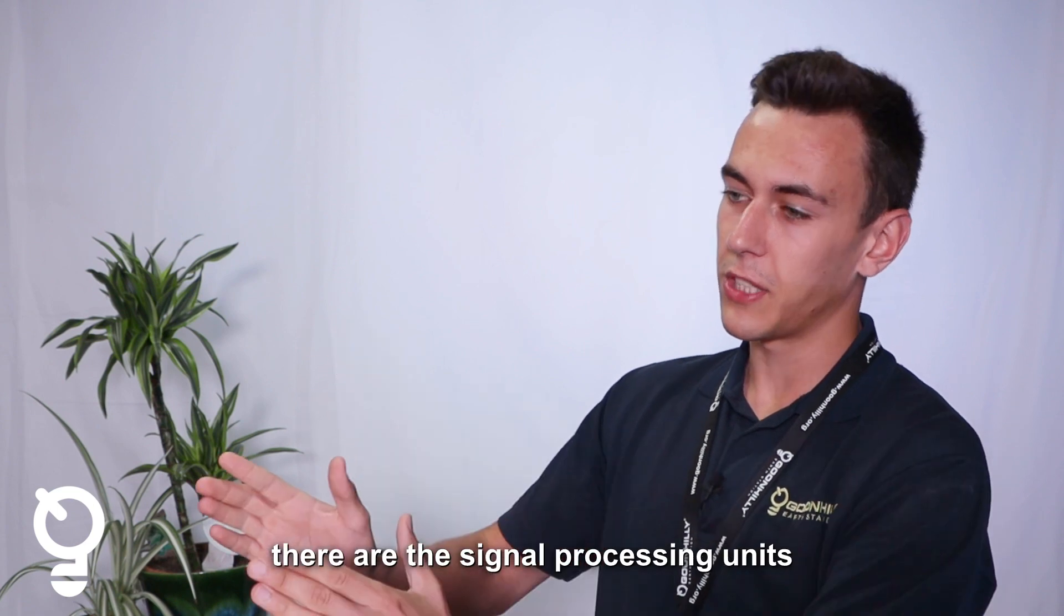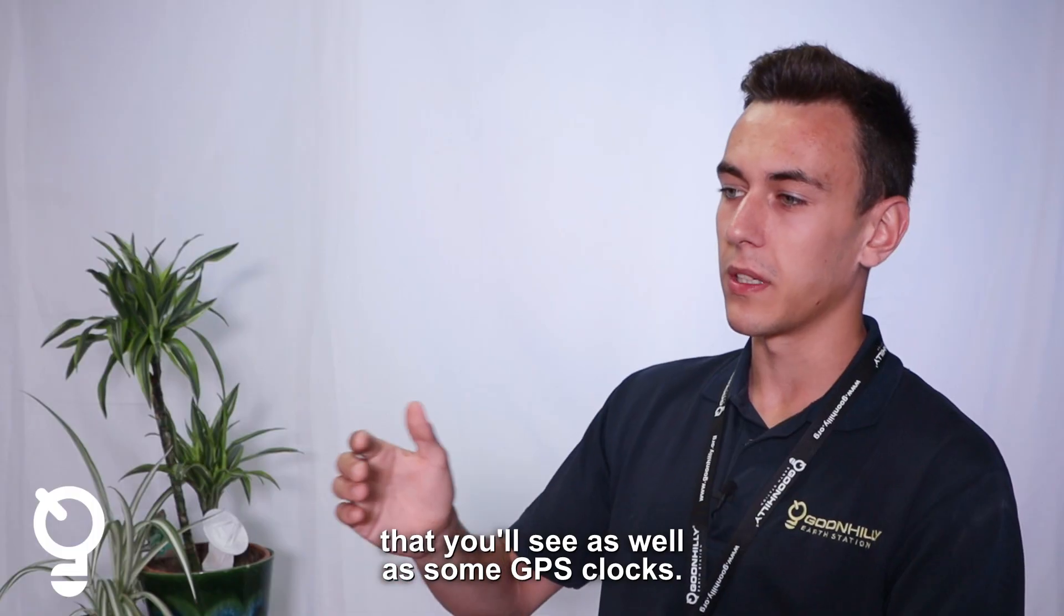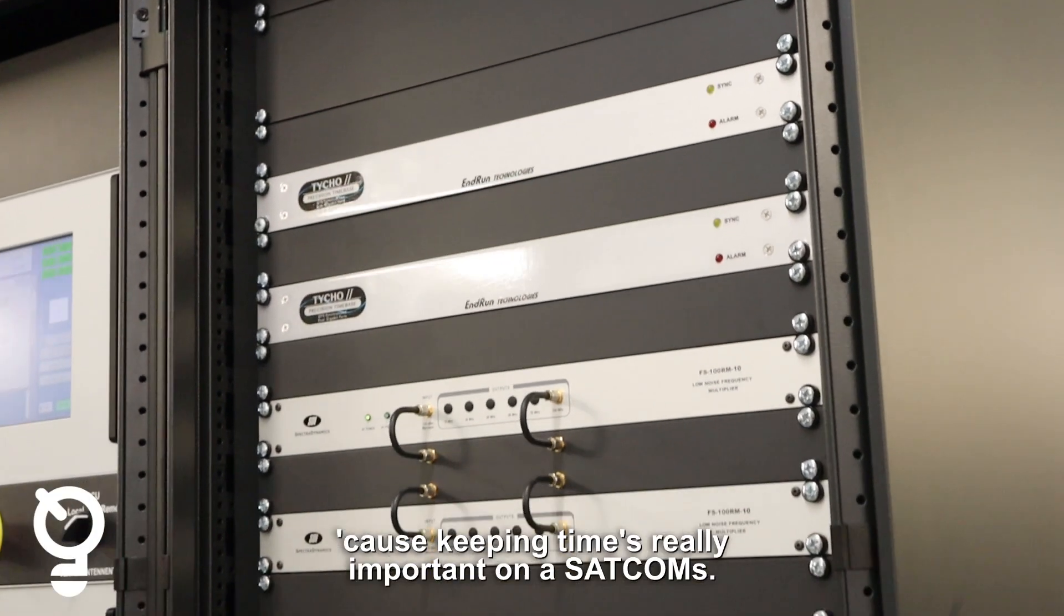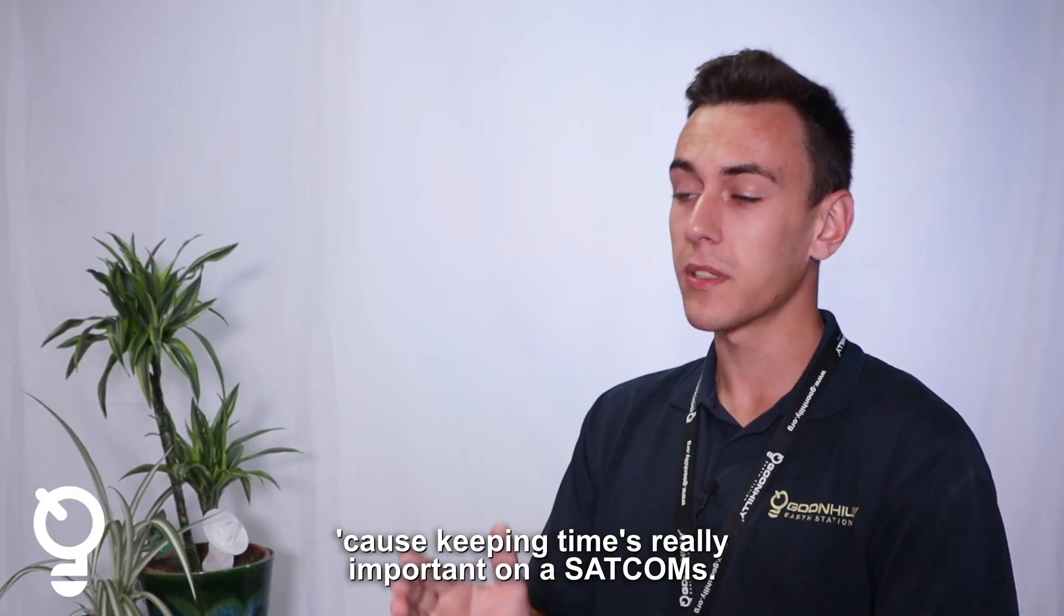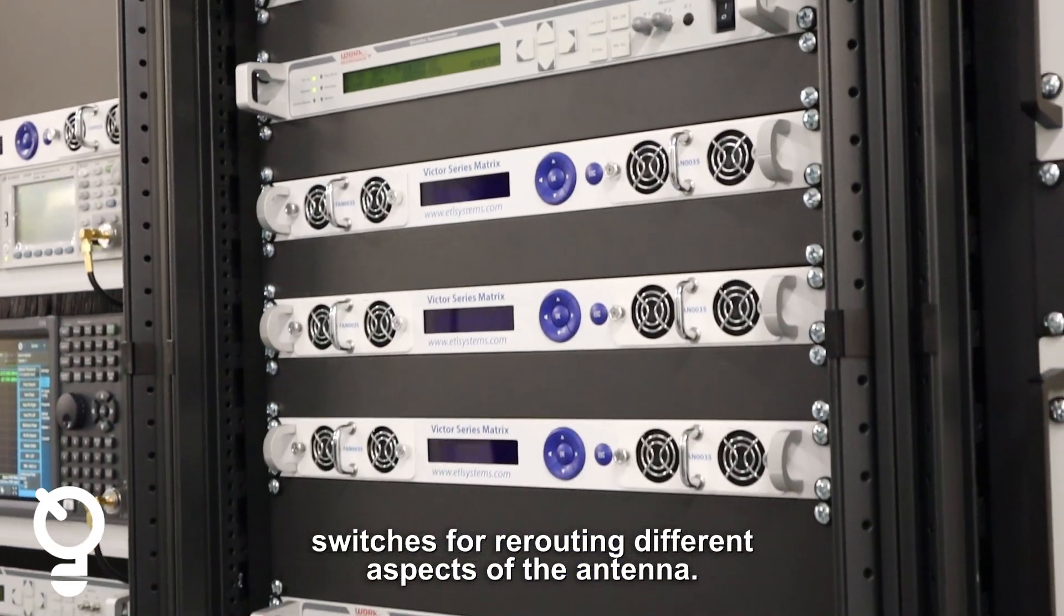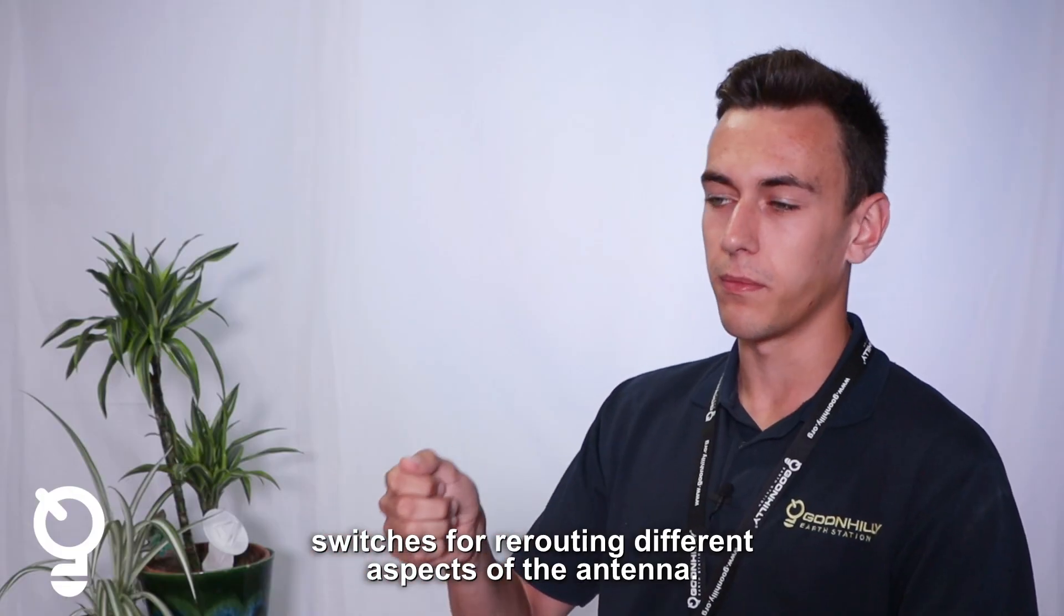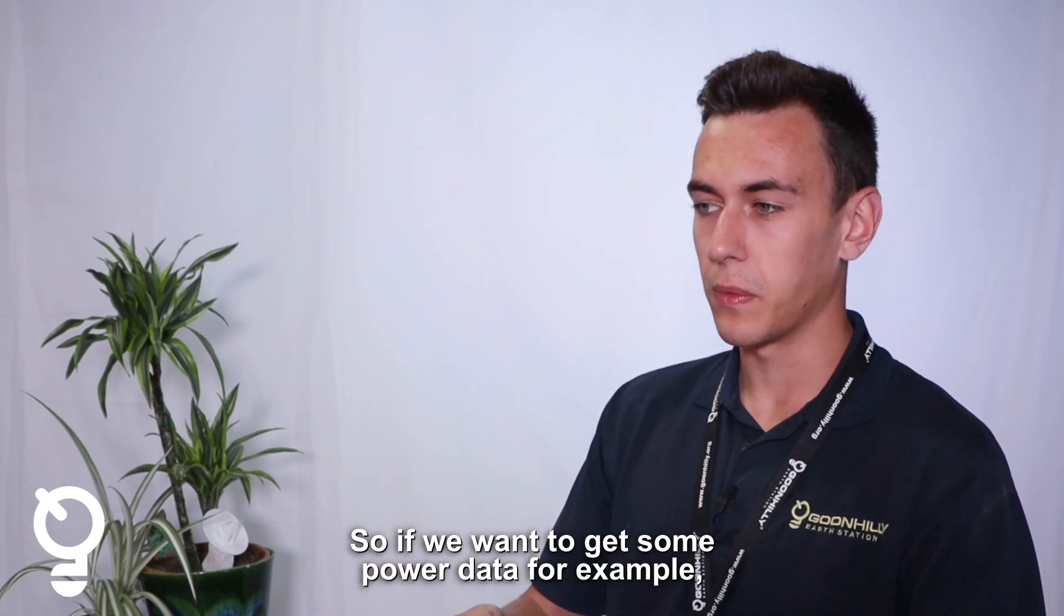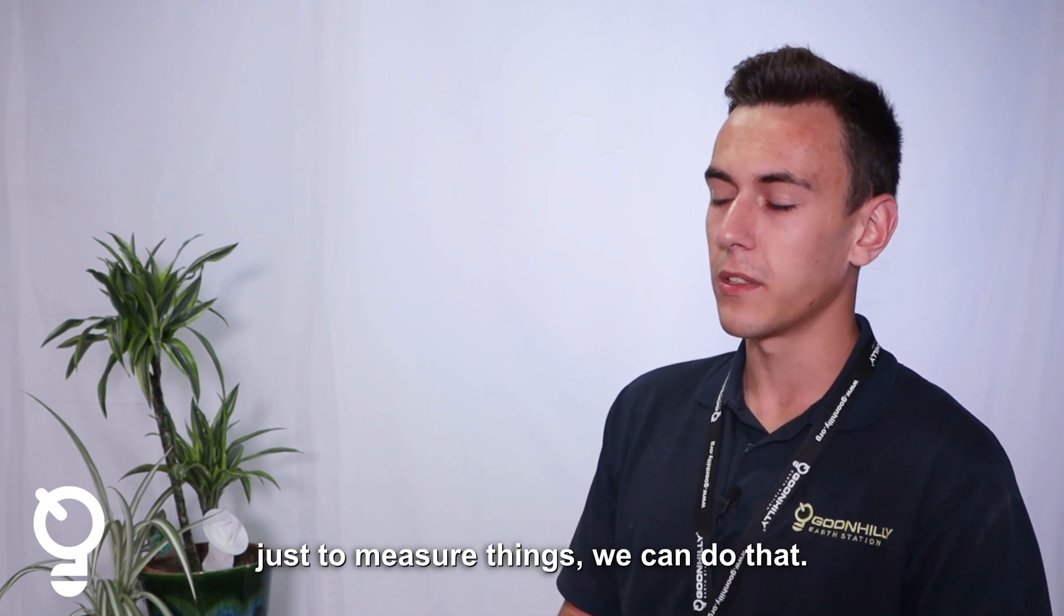As you continue around, there are the signal processing units that you'll see, as well as some GPS clocks. Those are for keeping time, because keeping time is really important in SATCOMS. There are also switches for rerouting different aspects of the antenna, so if we want to get some power data, for example, just to measure things, we can do that.